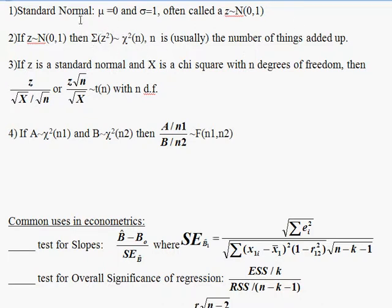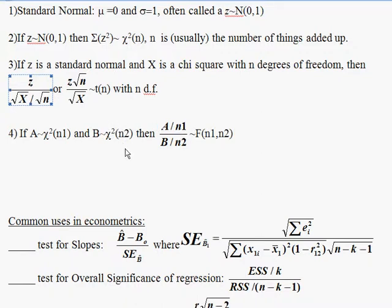Think about the formula for a sample variance. A t is something that's normally distributed on the top, divided by the square root of a chi-square, divided by the square root of n. And this looks just like what you're doing with a standard t-test for a one mean.